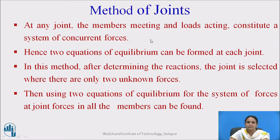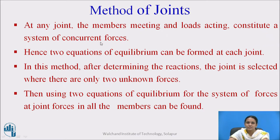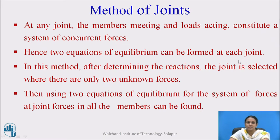Now we will see how to calculate forces in all the members of a truss by method of joint. In this method, we start from the joint where all the forces are in a concurrent system. At any joint, the members meeting and the loads acting constitute a system of concurrent forces. We choose the joint where we get only two unknowns or at least one known force, so the two equilibrium equations can be formed at each joint.